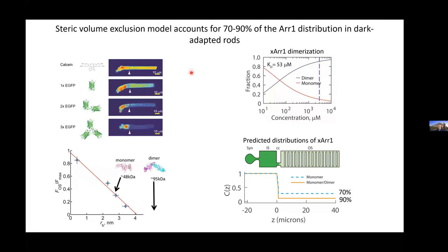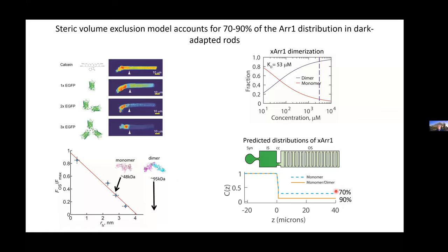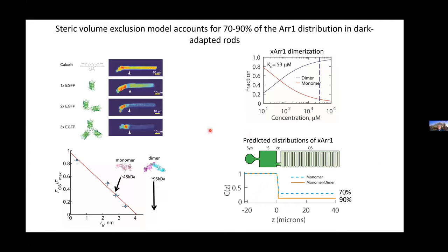Evaluating what this means for the hypothesis: using our model, we predict the distribution for arrestin monomer, dimer, and a monomer-dimer mixture governed by the measured KD at about 3 millimolar arrestin concentration in photoreceptors. We can account for about 70% of the inner segment preference with monomers alone, and up to 90% with a monomer-dimer mixture. So the vast majority of the dark-adapted arrestin distribution can be accounted for by this simple biophysical mechanism, without requiring any active transport.